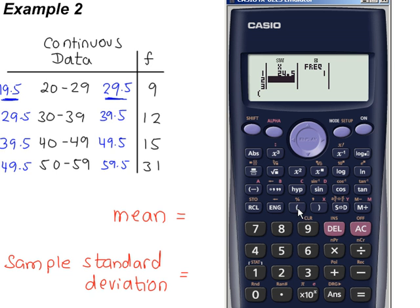The next one, brackets, 29.5 plus 39.5, in brackets again, divide by 2. You can probably guess the rest. There's a nice pattern here, so 24.5, 34.5, 44.5, and then 54.5.